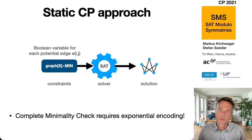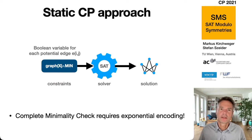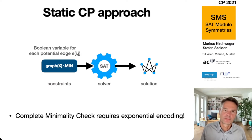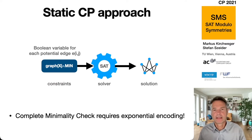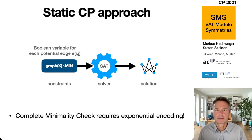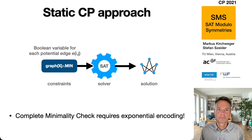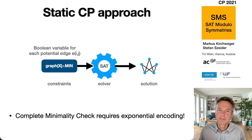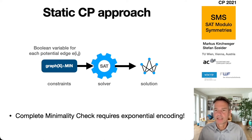One can take an encoding that contains both the graph property and the minimality and feed this together to a SAT or CP solver. However, a complete minimality check requires an exponential size encoding.